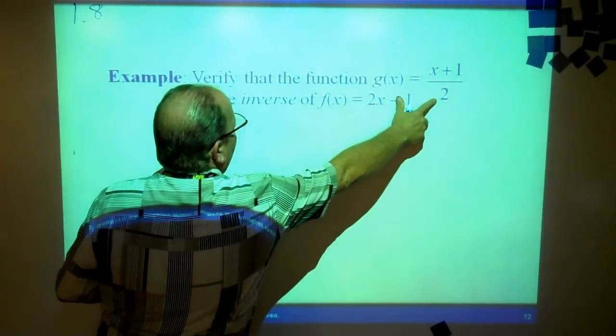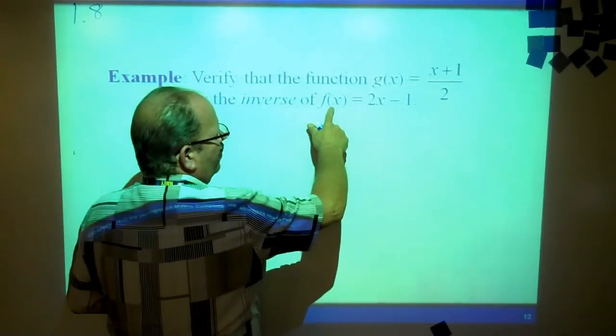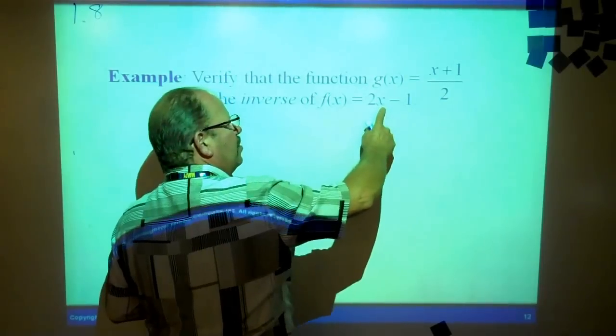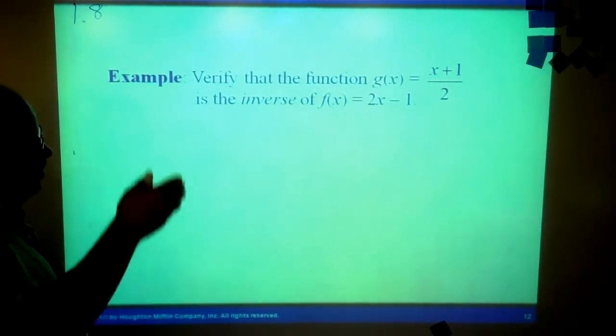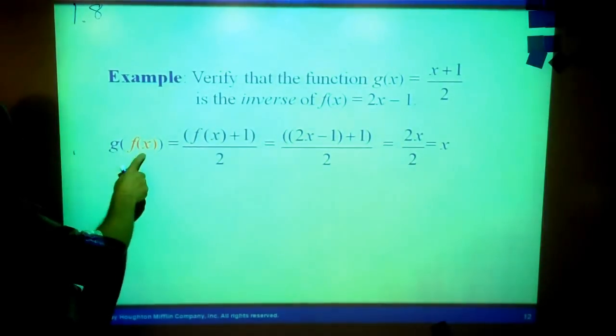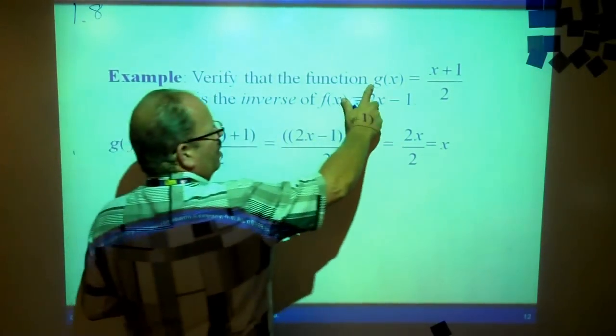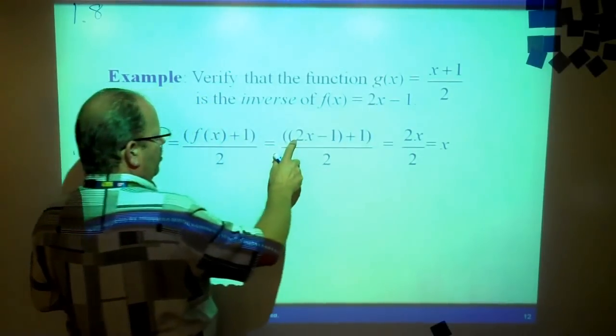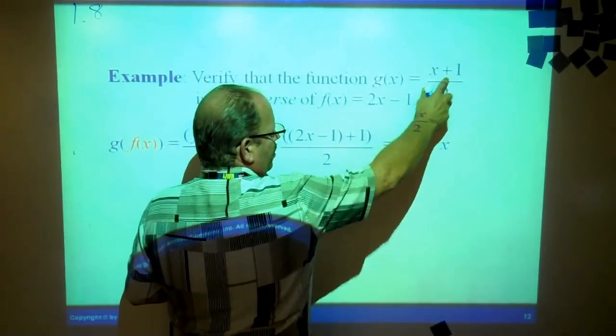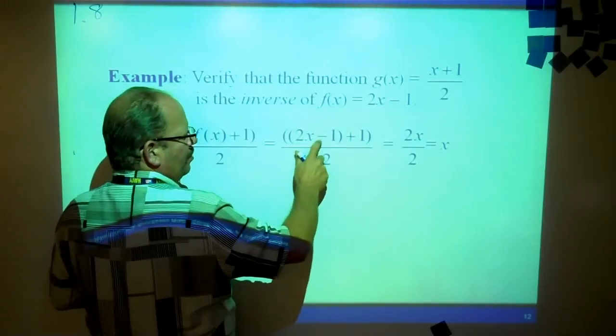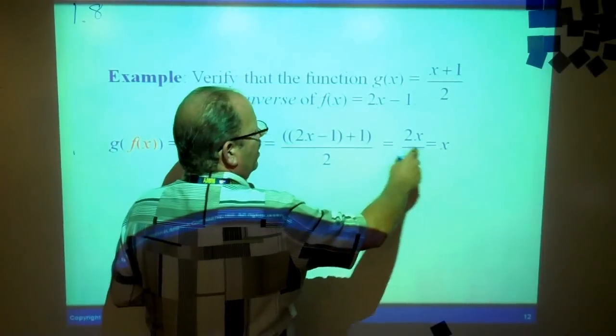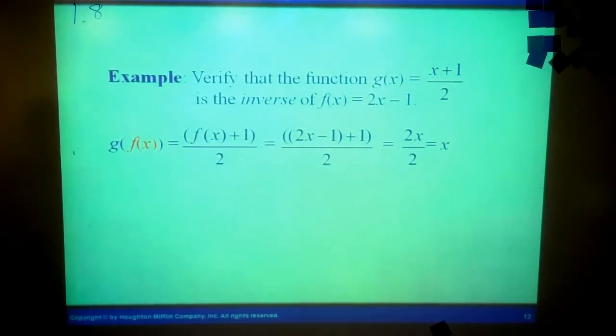So verify that g(x) equals (x + 1) over 2 is the inverse of f(x) equals 2x minus 1. We're going to take one and insert it into the other and see if the answer is x. If it's just x, then yeah, then they're inverses. So we take g of f(x), g of f(x). f(x) is 2x minus 1, so we put 2x minus 1 in here plus 1 over 2 and we do the math. 2x minus 1 plus 1 is 2x over 2. 2x over 2 is just x. So yes, those are in fact inverses of each other.